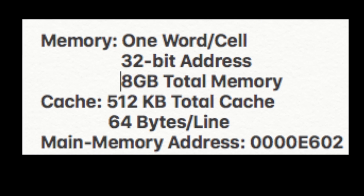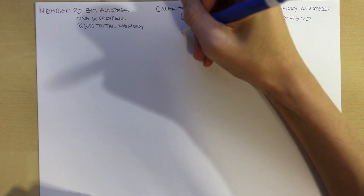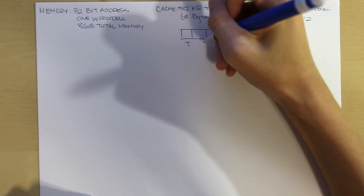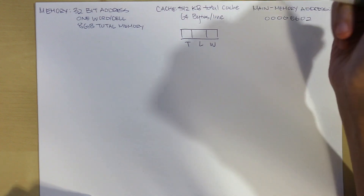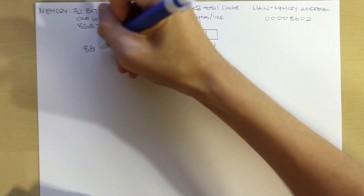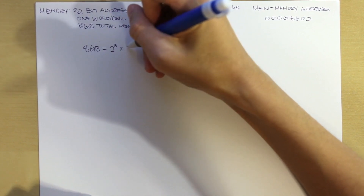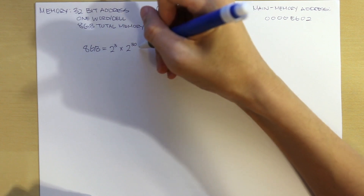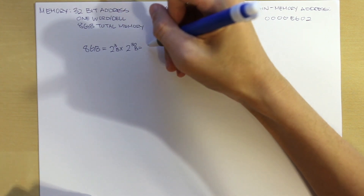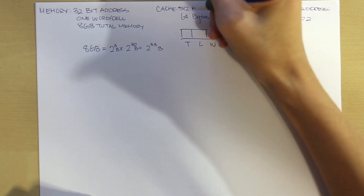This is the information for the memory cache and the main memory address — here is the given information. From there we want to look for our tag, line, and word. We know that 8 gigabytes breaks down to 2^3 bytes times 2^30 bytes, which gives us 2^33 bytes.